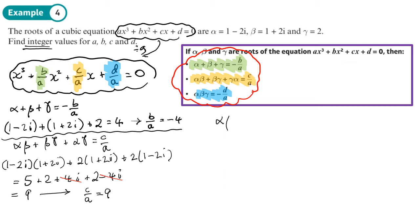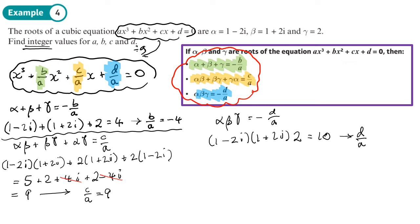For d over a: alpha beta gamma equals negative d over a. We compute (1 minus 2i)(1 plus 2i) times 2. Again, the sum of two squares gives 1 squared plus 2 squared equals 5, and 5 times 2 is 10. So negative d over a equals 10, which means d over a equals negative 10.